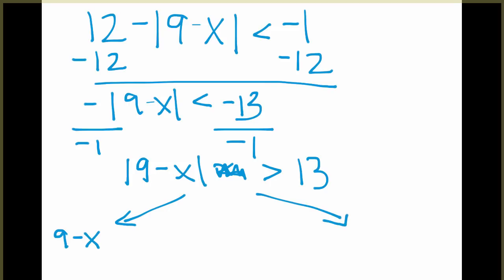One inequality stays exactly the same, while the second, we have to flip the inequality sign and flip the sign of what we're solving for. So 9 minus x is greater than 13, and 9 minus x is less than negative 13.